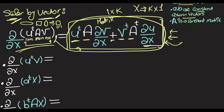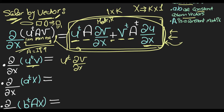Let us start by finding ∂/∂x of u-transpose v. This is basically the main identity except A is set to I. The result is u-transpose I times ∂v/∂x, which is just u-transpose ∂v/∂x, because I multiplied by that matrix gives the same matrix. Then plus v-transpose times ∂u/∂x.